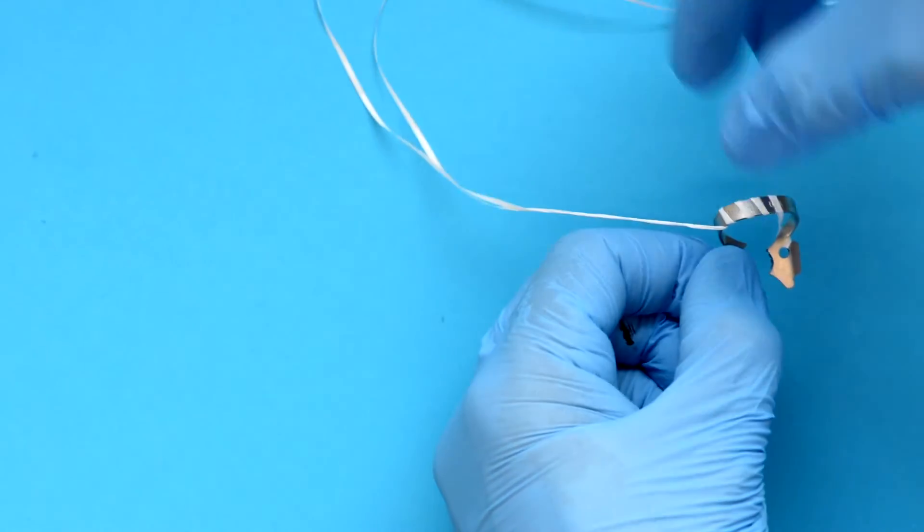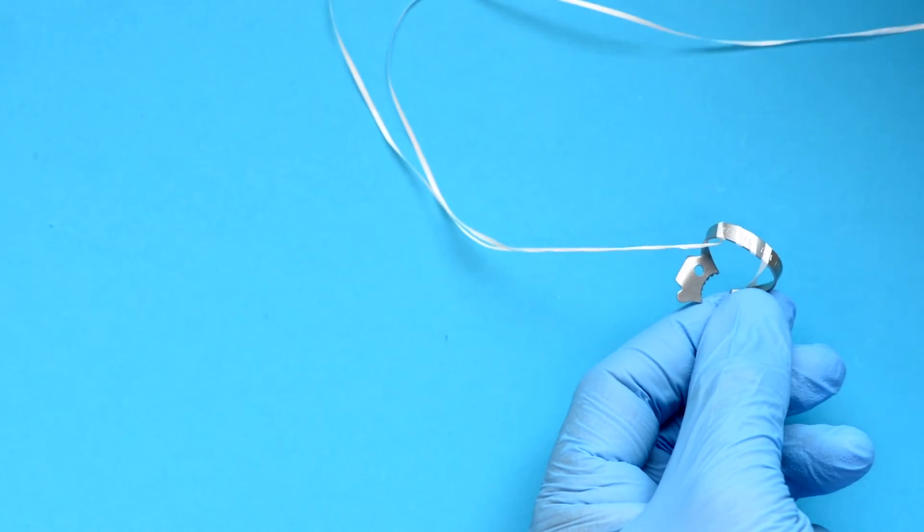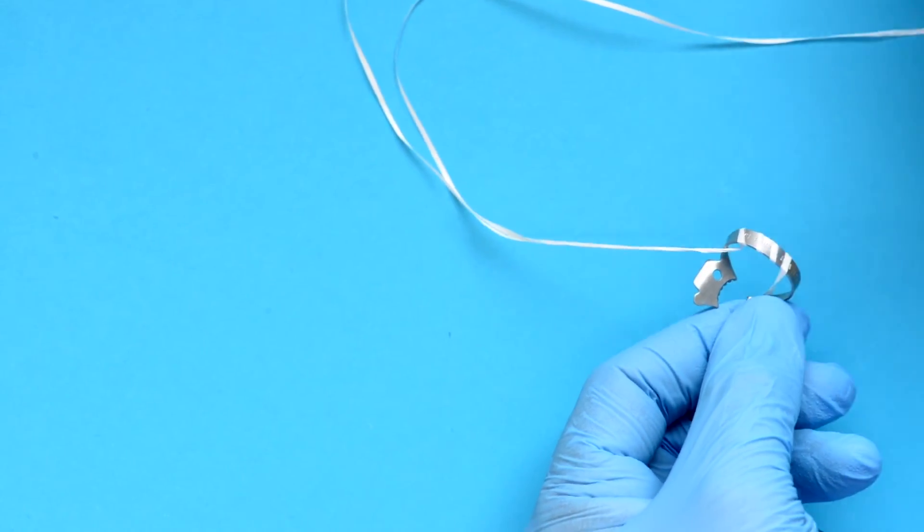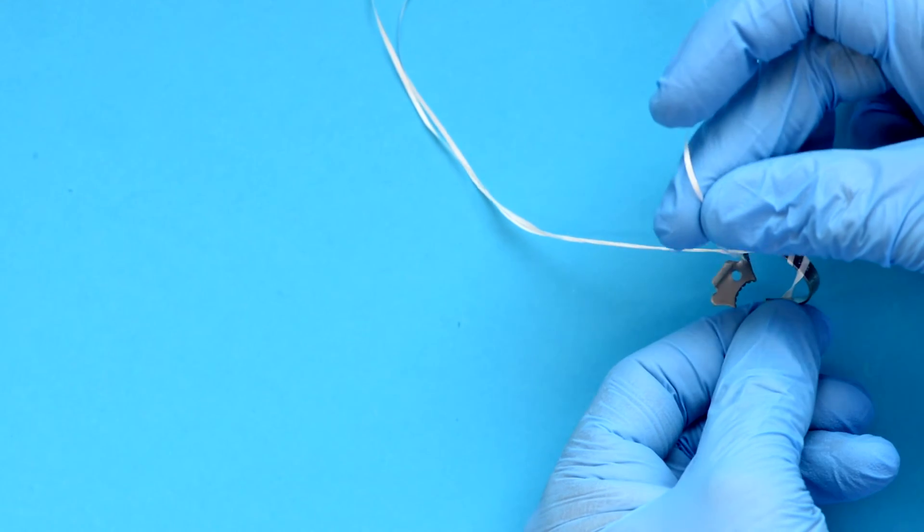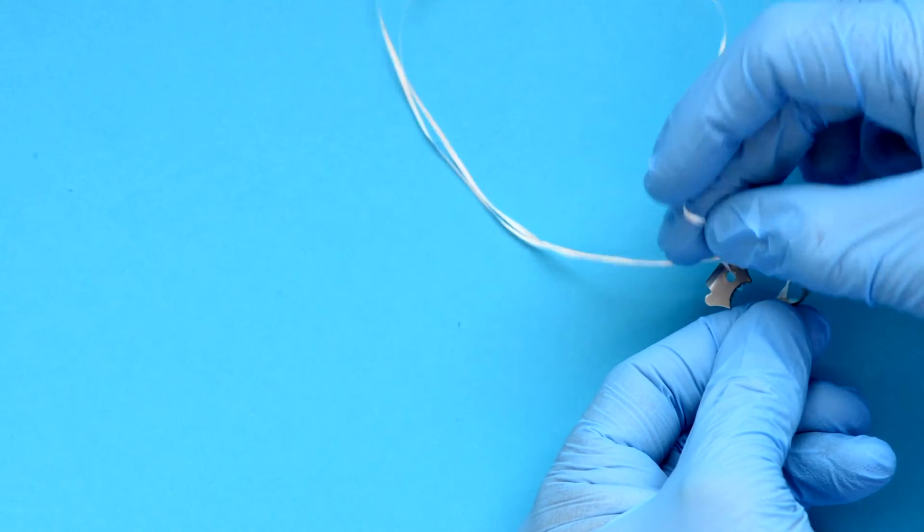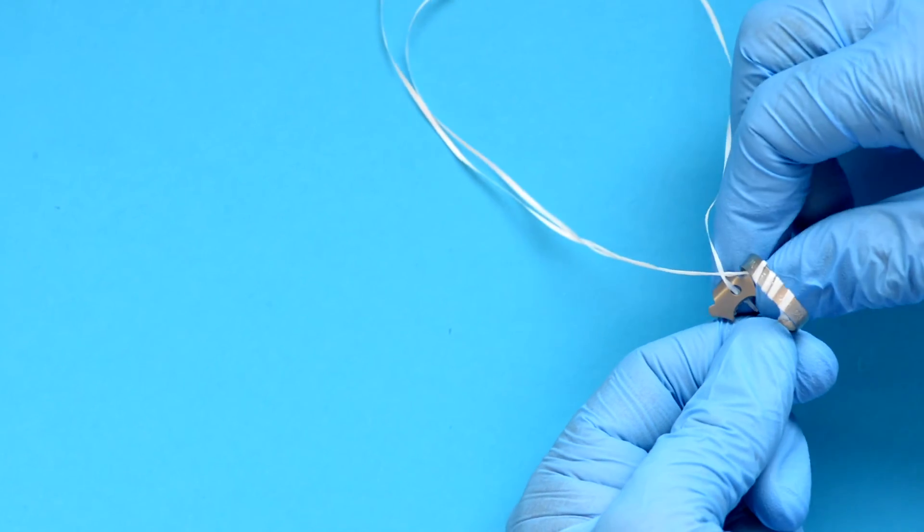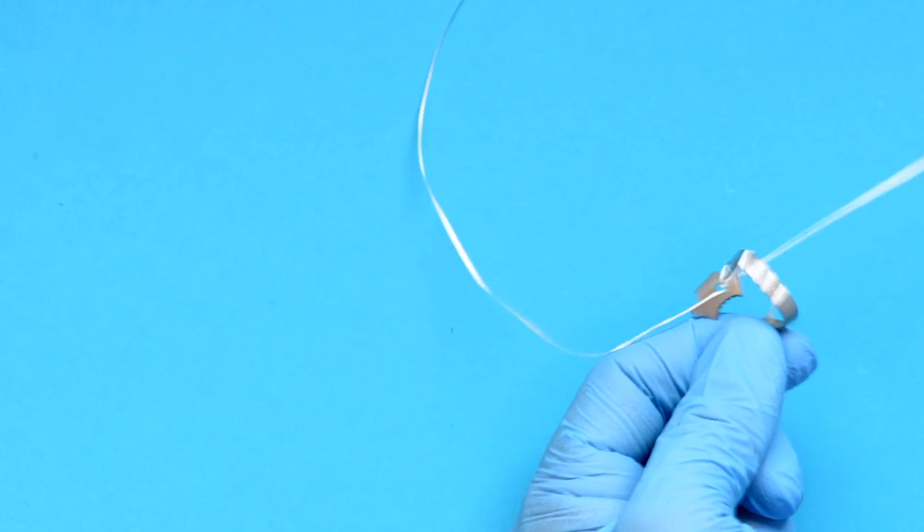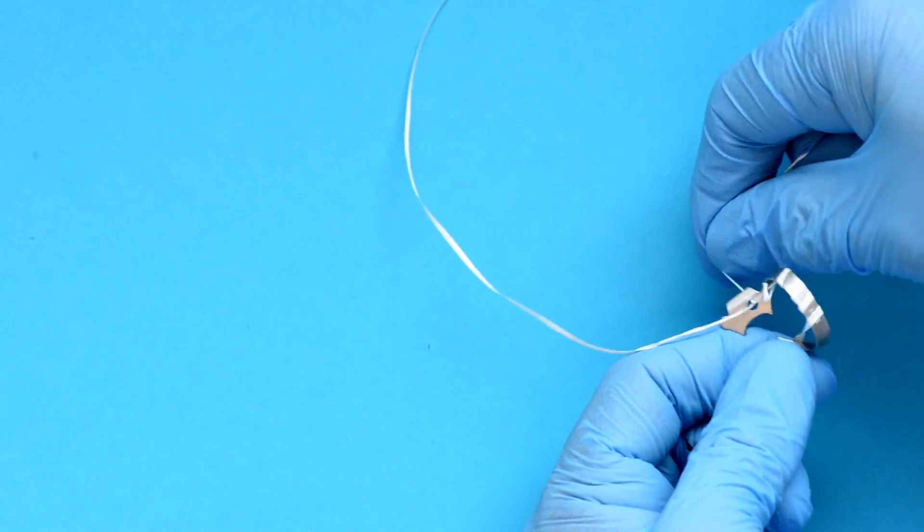Through to the other side, and once you get to the other side, you thread it through the hole in the jaw of the clamp again and just pull that through. That's one side.